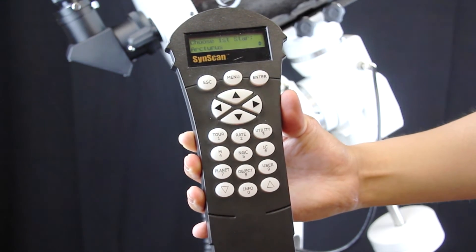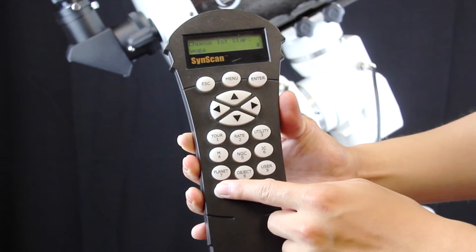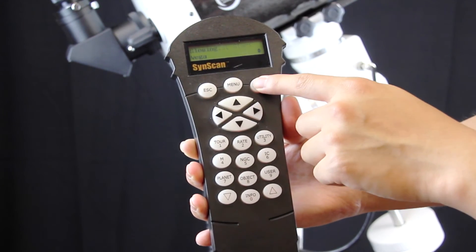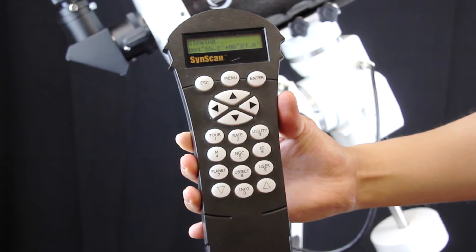Choose the first star from the list given based on your location and time. Here we want to point to Vega, press enter, and the mount will start slewing.